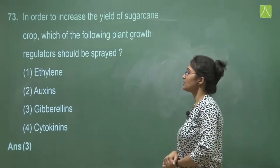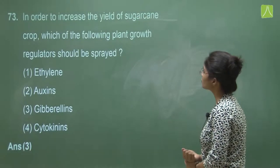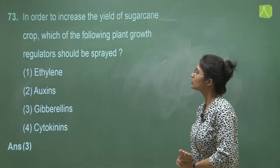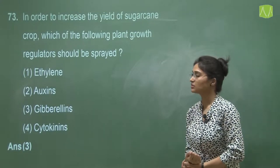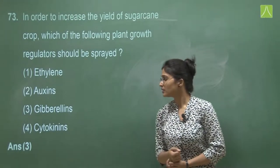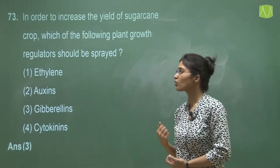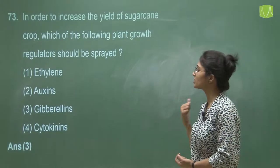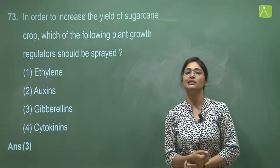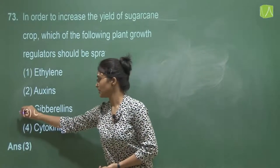Question 73 asks which plant growth regulator should be sprayed to increase the yield of sugarcane crop. This is from NCERT. The answer is gibberellins — spraying the sugarcane crop with gibberellins increases production by 20 tonnes per acre. The correct answer is option three.